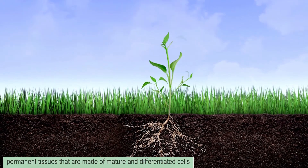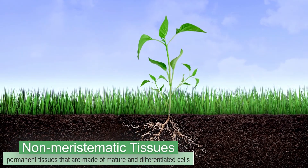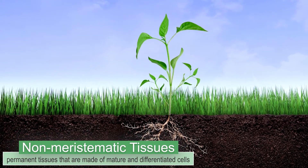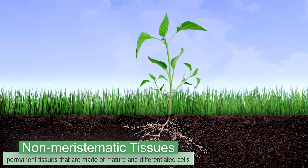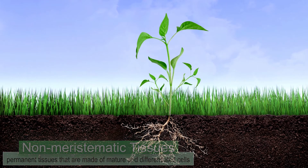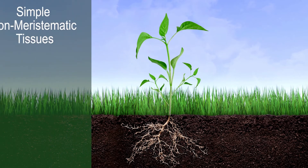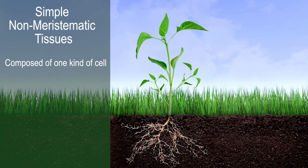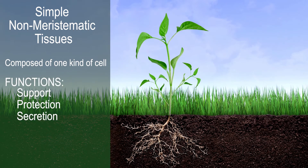Non-meristematic or permanent tissues are made of mature and differentiated cells. They are either simple or complex. The simple ones are composed of only one kind of cell and perform certain functions for the plant such as support, protection, and secretion.